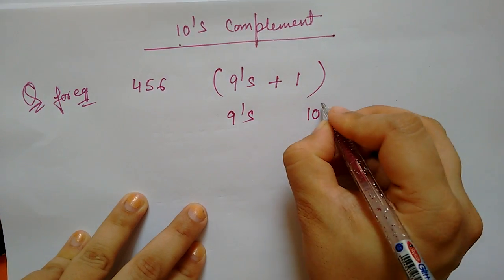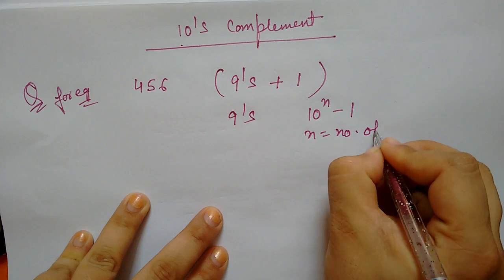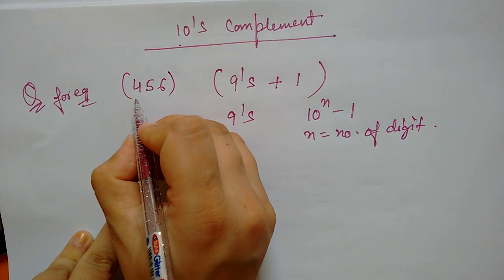The formula was 10 to the power of n minus 1. Now, what is the number of digits? How many digits are in that number? Now, we have this number. How many digits are there?